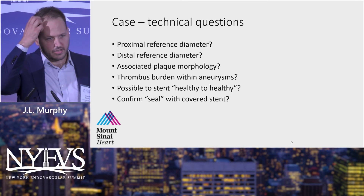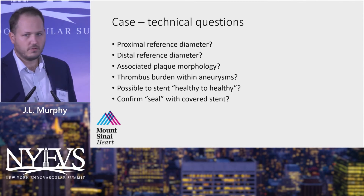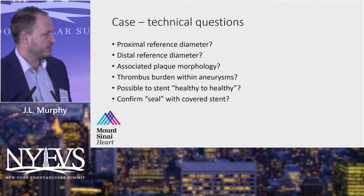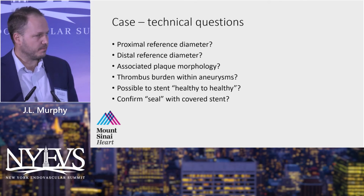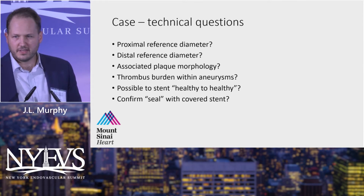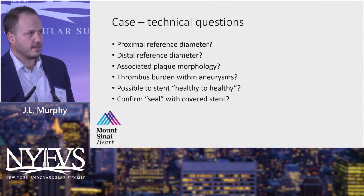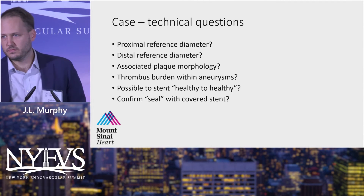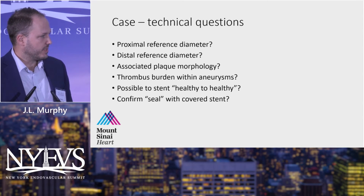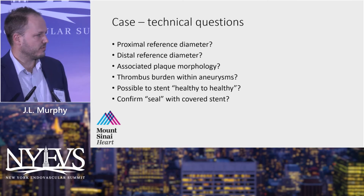Looking at these angiograms brought up a lot of questions. What are we going to use as our proximal reference diameter when choosing devices? What are we going to use as a distal reference diameter? With the associated occlusive disease, what is the plaque morphology? And even within the aneurysms, what's the extent of thrombus? Popliteal aneurysms can have a very high thrombus burden, and a lot of the morbidity is actually related to distal embolization — so you always worry about thrombus in the aneurysm. We were thinking up front that we'd probably need to stent, given the aneurysmal disease.